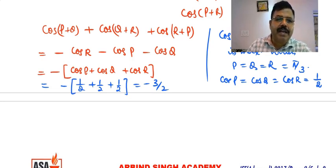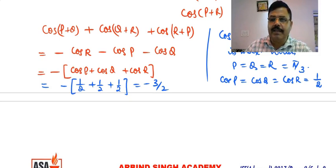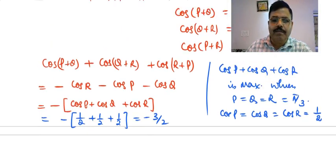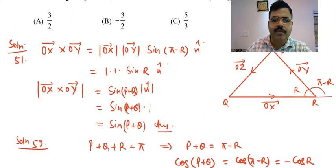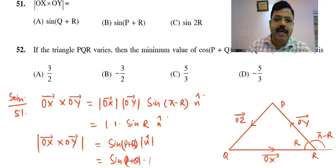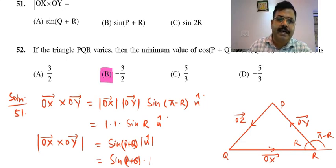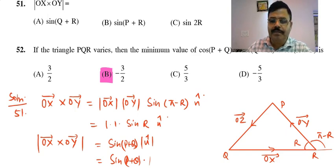Since the expression is the negative of (cos P + cos Q + cos R), the minimum value of our expression is minus 3/2. Therefore, the answer is option P, which is minus 3/2.